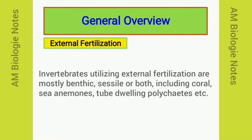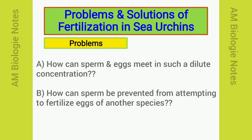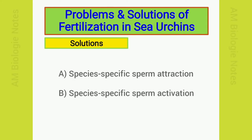In this video I will discuss about the external mode of fertilization in animals, and I have taken sea urchins as an example. The meeting of sperm and egg is not a simple matter in the case of sea urchins. Many marine organisms release their gametes into the ocean at the same time, so sea urchins face two big problems: how can sperm and eggs meet in such a dilute concentration, and how can sperm be prevented from attempting to fertilize eggs of another species? Two major mechanisms have evolved to solve these problems: species-specific sperm attraction and species-specific sperm activation.